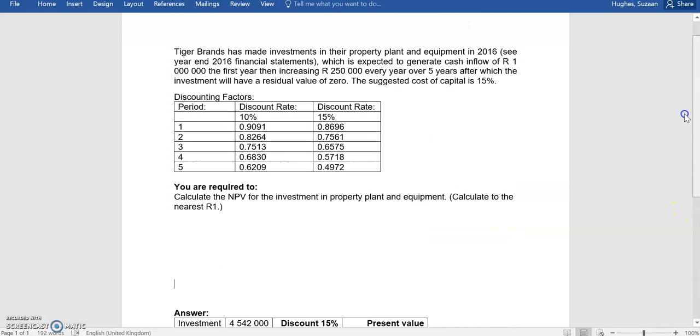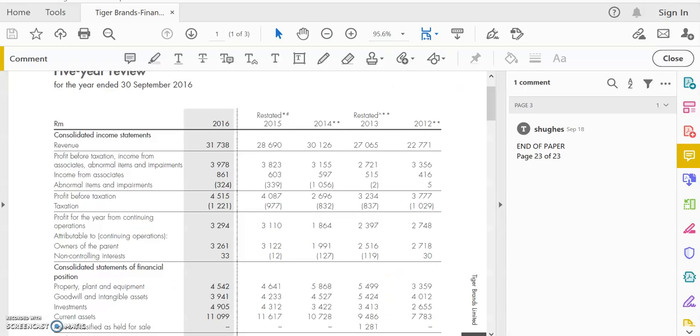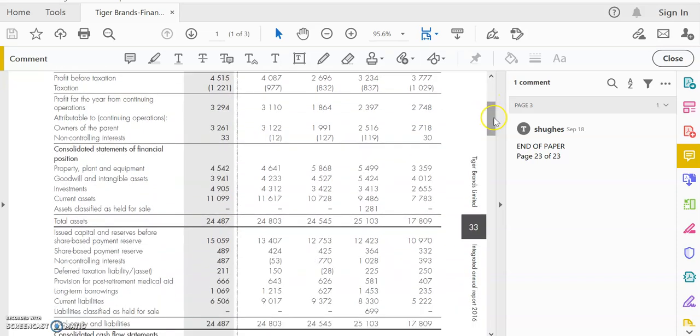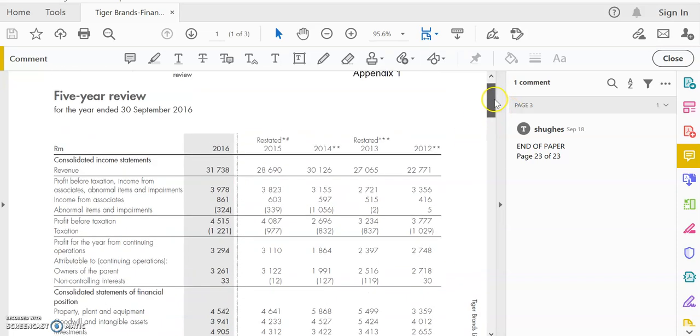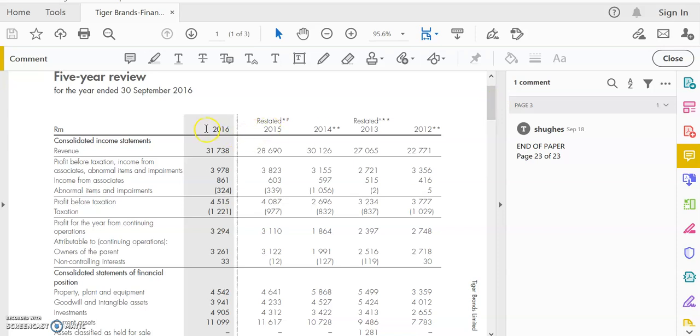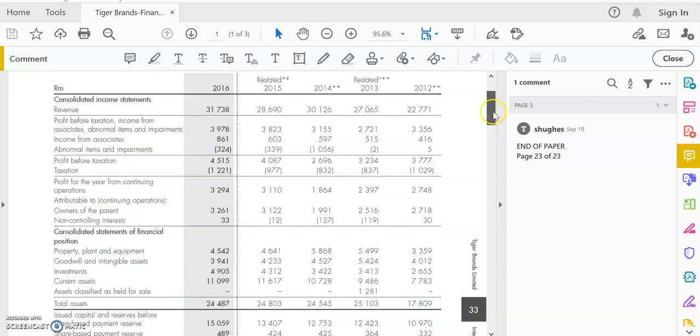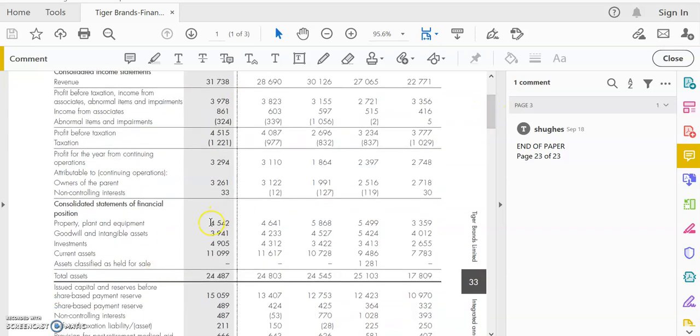To go back to our question, it was an investment in property, plant and equipment in 2016. So on their financial statements, if we go and look at their investment, it's important to look at the correct year. So we want to look at 2016, the property plant and investment for that year.